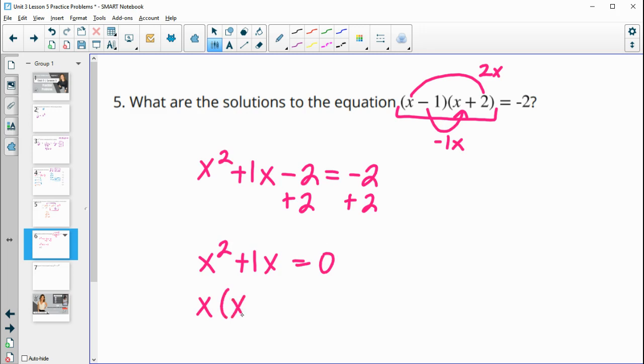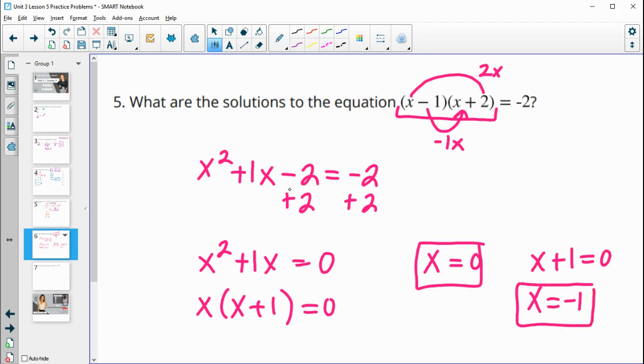So we'll factor out an x. So when I factor an x out of x squared, I get x. And x out of 1x, I get 1. So then we'll split these and set them equal to 0. So x equals 0. And x plus 1 equals 0. So this one's already solved. And here we'll subtract 1 from both sides to get x equals negative 1.